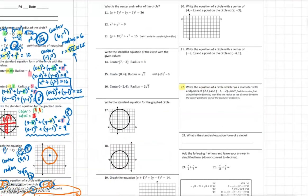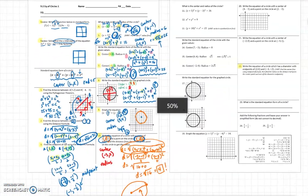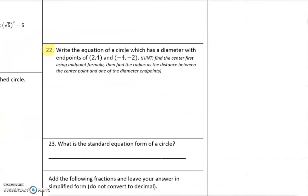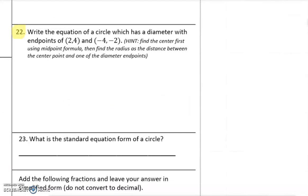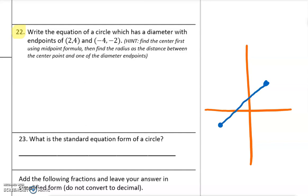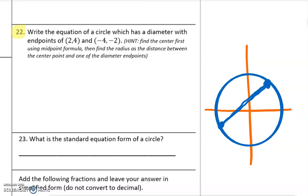All these questions on the back are similar to the ones I covered on the front, except for number 22, which can be a little more difficult but not too bad. It says write the equation of a circle which has diameter endpoints of 2, 4 and negative 4, negative 2. So the point 2, 4 is up here and negative 4, negative 2 is down here on the graph — this is the diameter. Those are the diameter endpoints of the circle, so the circle probably looks something like that.